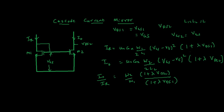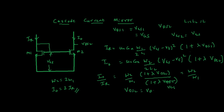We know VDS1 = VGS1 = VGS, so the denominator term becomes (1 + λ·VGS). However, VDS2 is not equal to VDS1, so we may not get the exact mirrored current. Even if W2 = 2·W1, we won't get IO exactly equal to 2·IR. To get exactly 2·IR when W2 = 2·W1, we need to ensure VDS2 is also equal to VDS1.